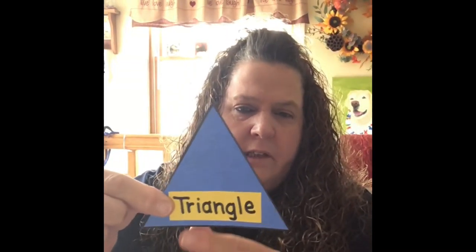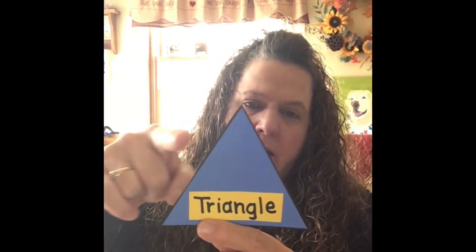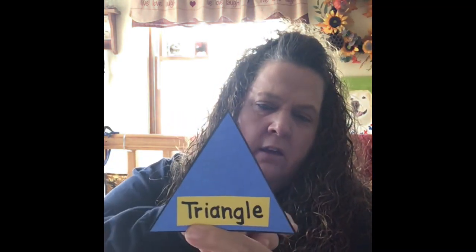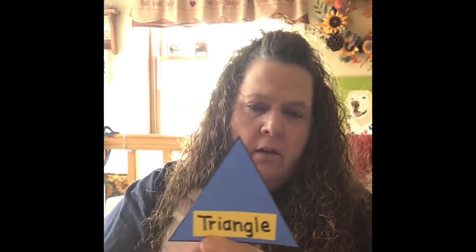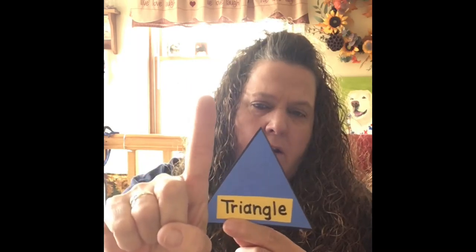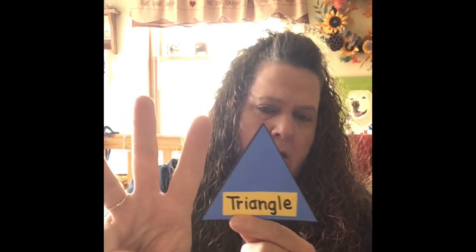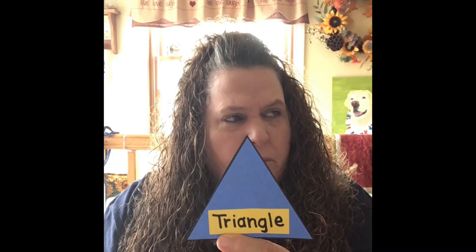There are two long sides and two shorter sides, so that is why it's a rectangle. It could be a door or a window. Rectangles can be different things all over your house. Now we're going to talk about this shape — how many sides do you see? I see one, two, three.